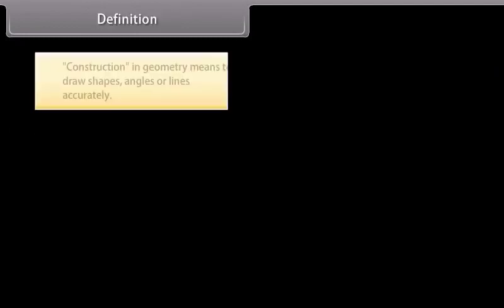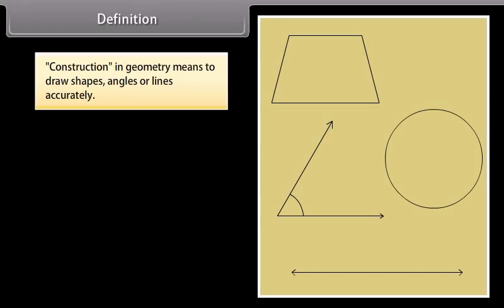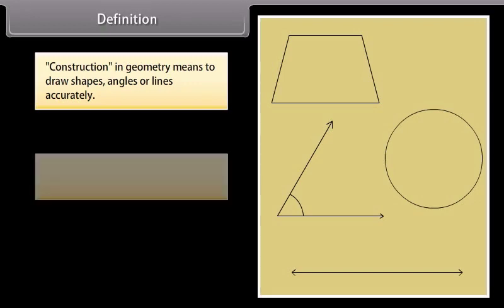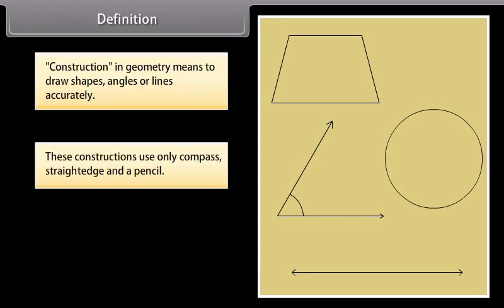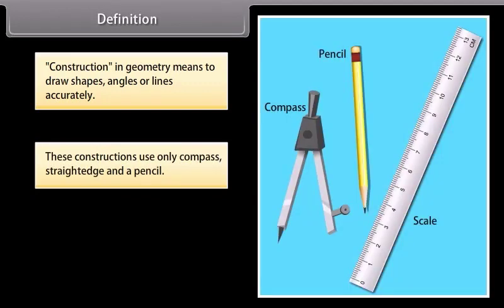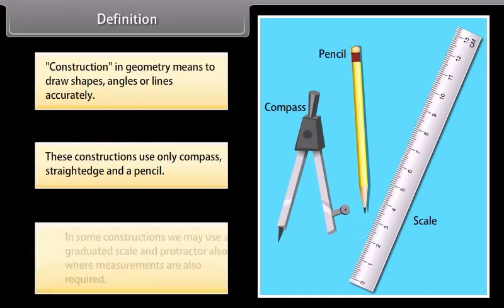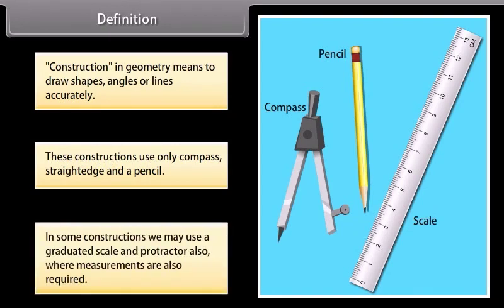Definition: Construction in geometry means to draw shapes, angles or lines accurately. These constructions use only a compass, straight edge — that is, a ruler — and a pencil. In some constructions we may also use a graduated scale and protractor, where measurements are also required.